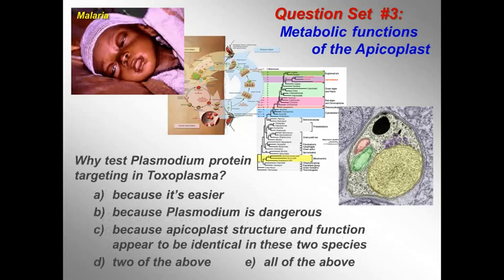Question 3.3: Why test Plasmodium protein targeting in Toxoplasma? Is it because: A — it's experimentally easier? B — because Plasmodium is dangerous? C — because apicoplast structure and function appears to be identical in these two species? D — for two of the above reasons? Or E — for all three of the above reasons?